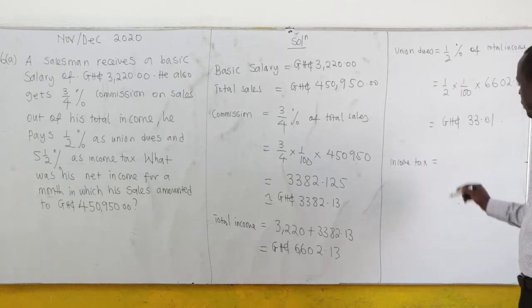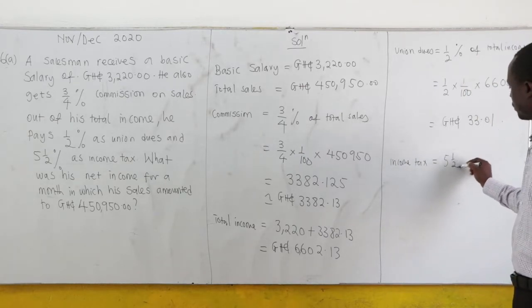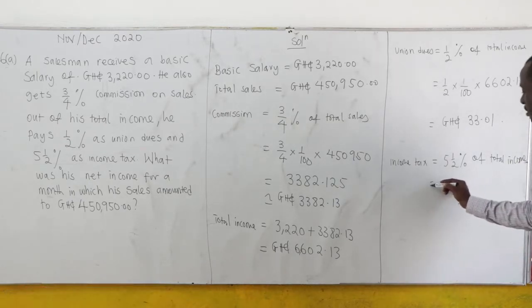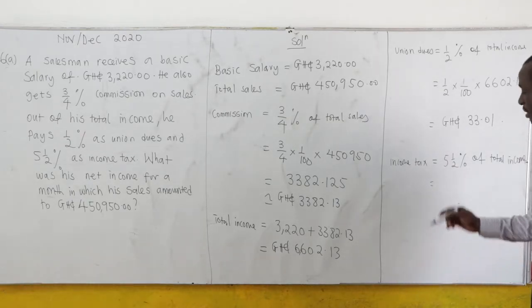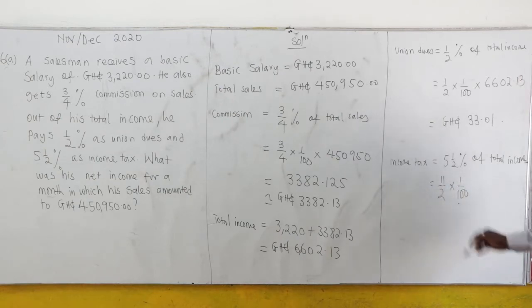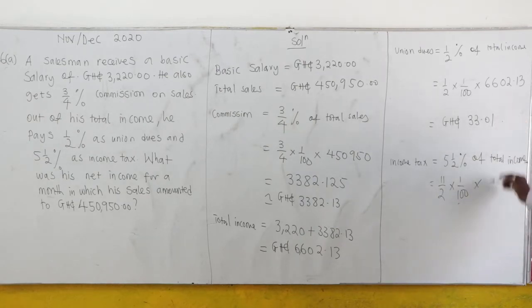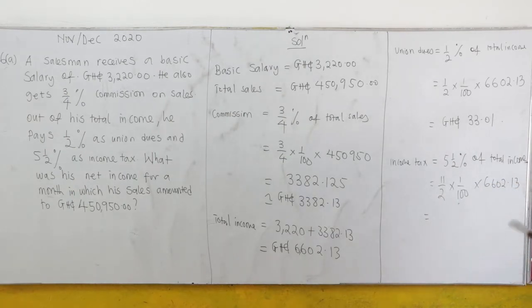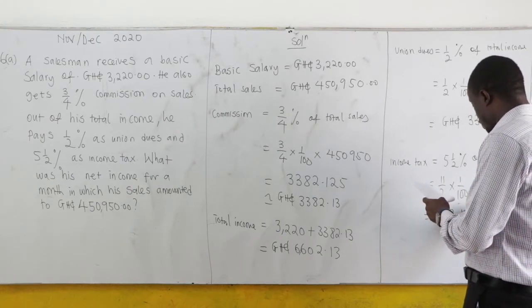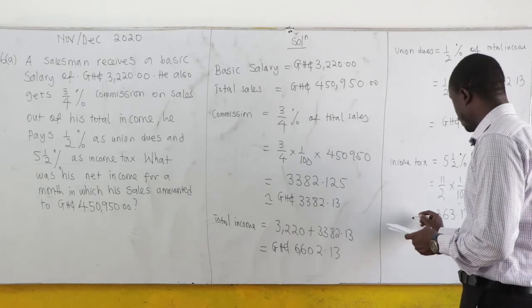We are also given that he pays 5½ percent as income tax. So income tax equals 5½ percent of the total income. Now 5½ equals 11/2, so we have 11/2 times 1/100 times 6602.13. When we work this out, we get 363.12 cedis.